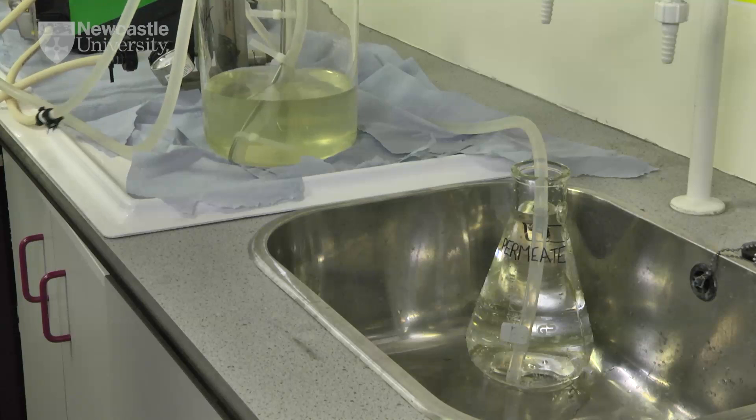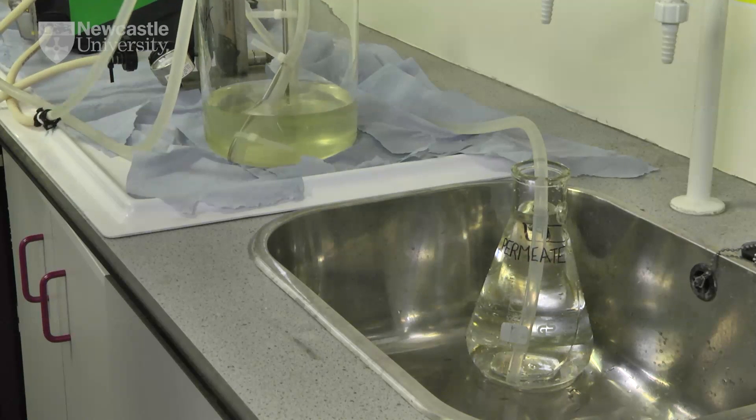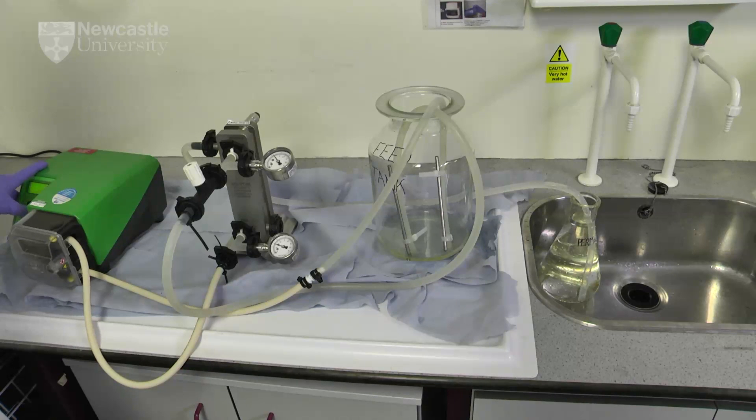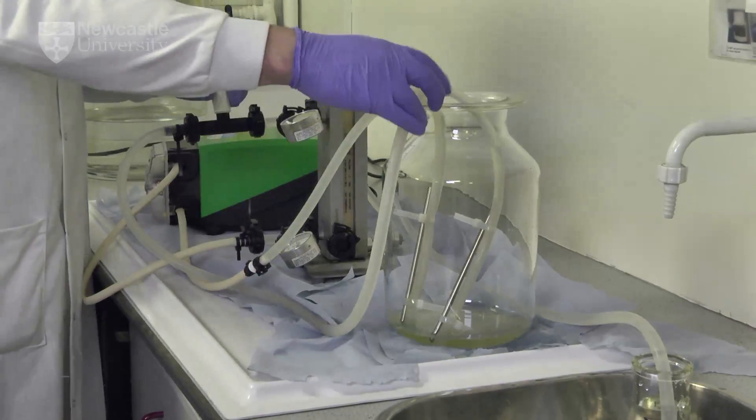The environmental sample recirculating back to the feed tank will reduce in volume as permeate is produced. To prepare one litre of concentrated inoculum, the recirculation would be stopped when approximately 500 millilitres remains in the feed tank.